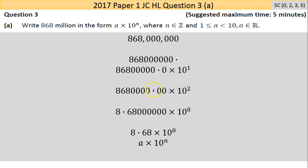I'm gonna keep going. I've moved it twice already—once, twice, three times, four times, five times, six times. So six more times is times 10 to the 6. The decimal is now here: 8.68000000 times 10 to the 8, because I moved it eight times in total.